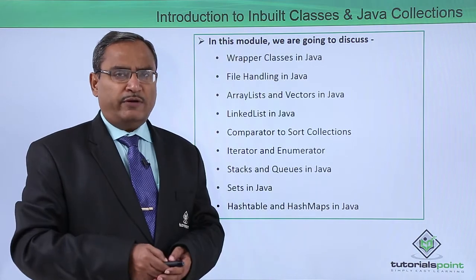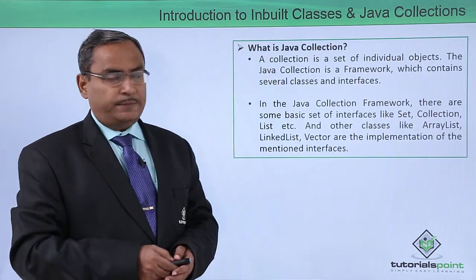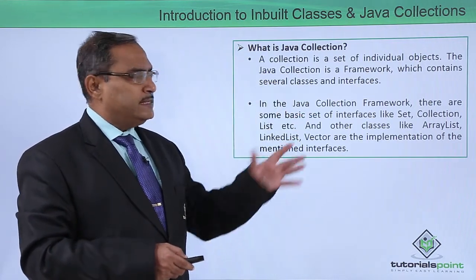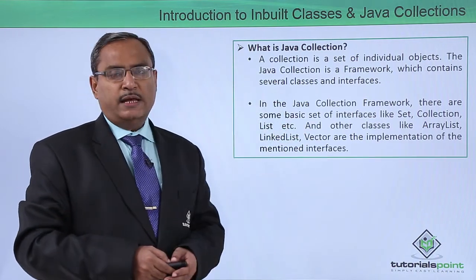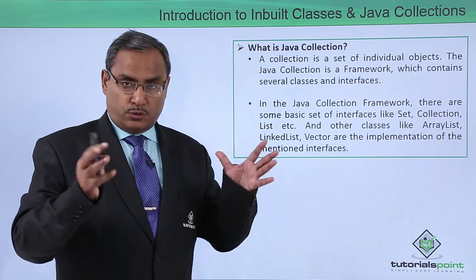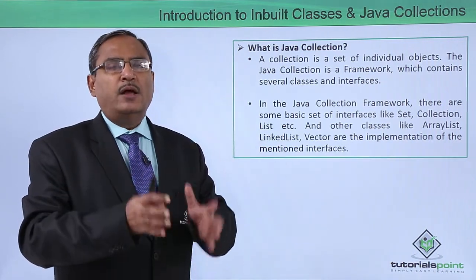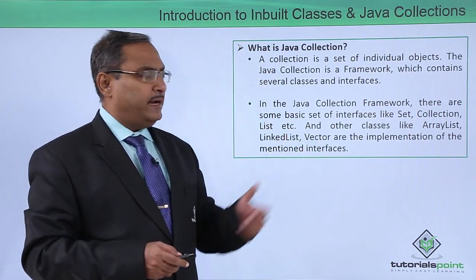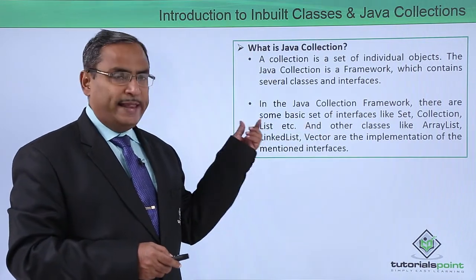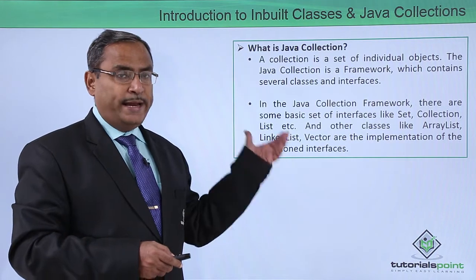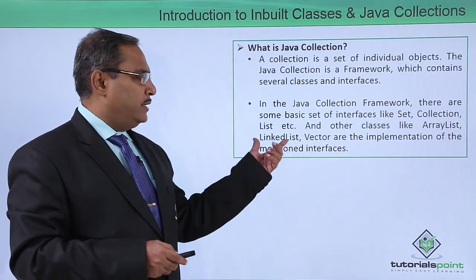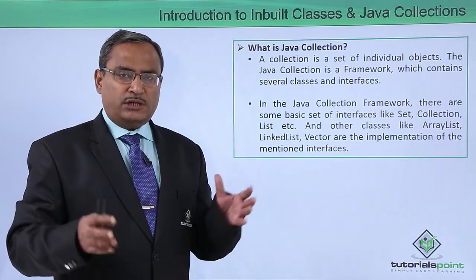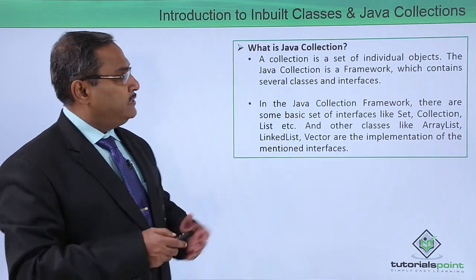So now let me discuss what is Java collections. A collection is a set of individual objects and the Java collection is a framework which contains several classes and several interfaces. Comprising several classes and interfaces, we can have one Java collection. In the Java collection framework, there are some basic set of interfaces like set, collection, list, etc. Other classes like ArrayList, linked list, and vectors are the implementations of the mentioned interfaces. That is why we are having this set of classes and interfaces in our Java collection.